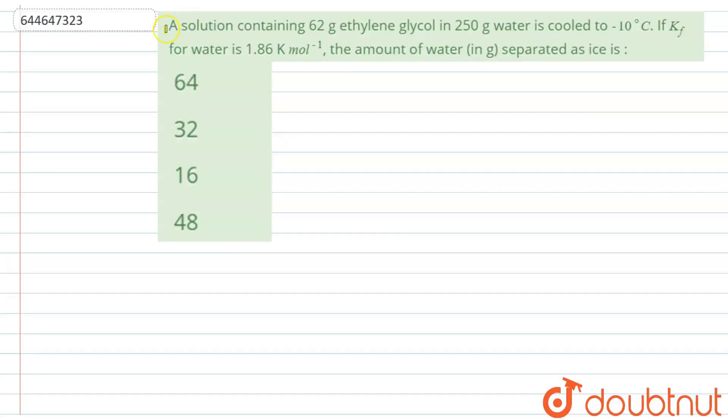The question given here is: a solution containing 62 gram ethylene glycol and 250 gram water is cooled to minus 10 degree Celsius. If KF for water is 1.86 Kelvin per mole, the amount of water in gram separated as ice is. Options are 64, 32, 16 or 48.